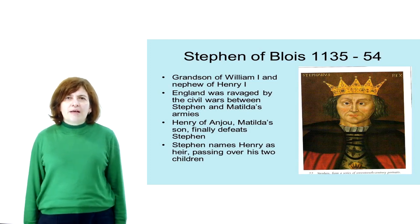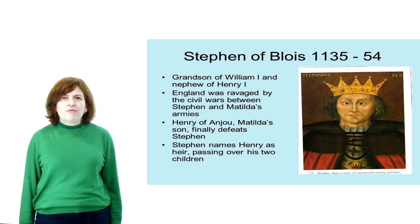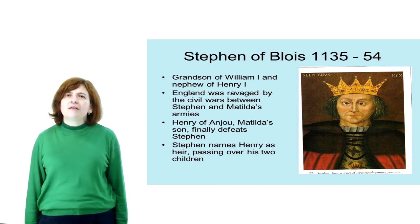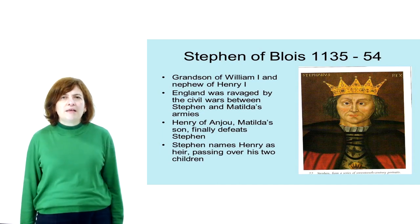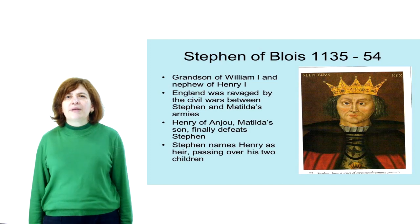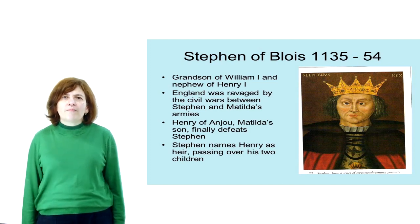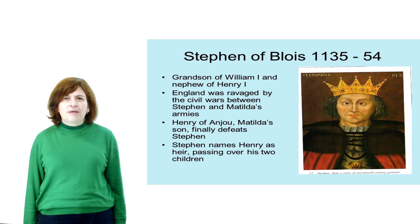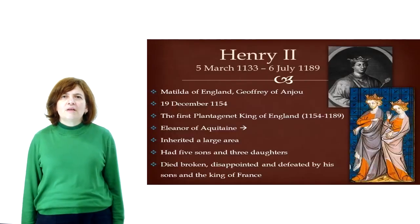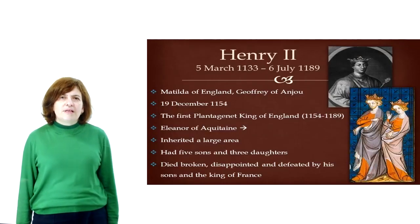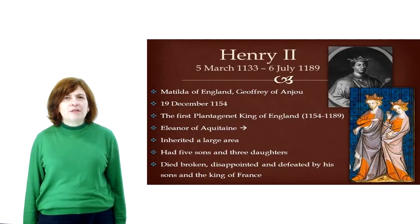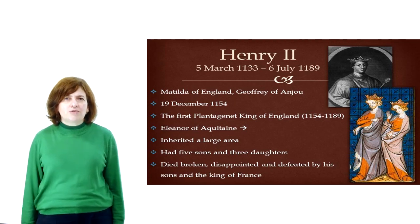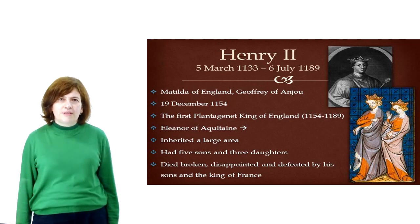So when he came to the throne as Henry II, he held an enormous empire including England, Normandy, Brittany, Anjou, and Aquitaine — called the Angevin Empire. Henry II was the first of thirteen Plantagenet kings who were to rule England for 300 years.